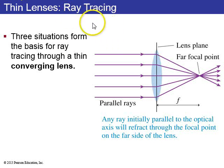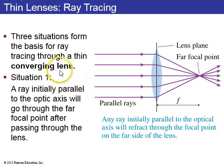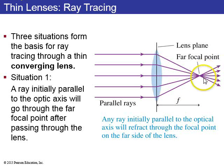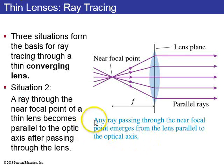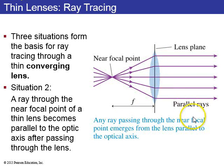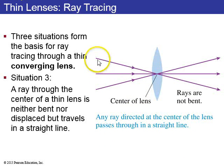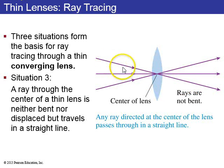Next I want to talk about ray tracing. For ray tracing through a converging lens, there are three situations to base your rays on. First, if a ray is parallel in front of the lens, it will pass through the far focal point on the other side. Second, if rays are diverging away from the near focal point on one side, they'll end up parallel on the other side — any ray passing through the near focal point emerges parallel. Third, a ray passing through the center of a thin lens doesn't bend at all; its direction is the same on both sides.